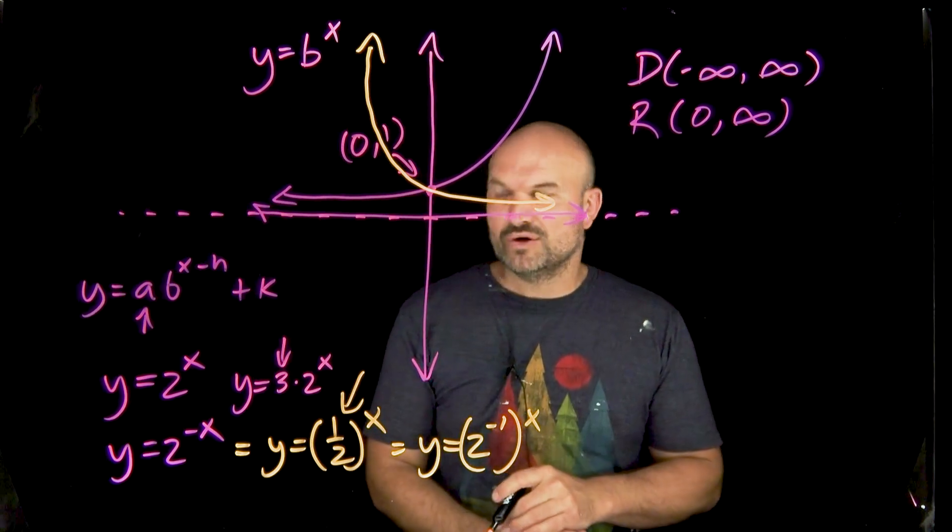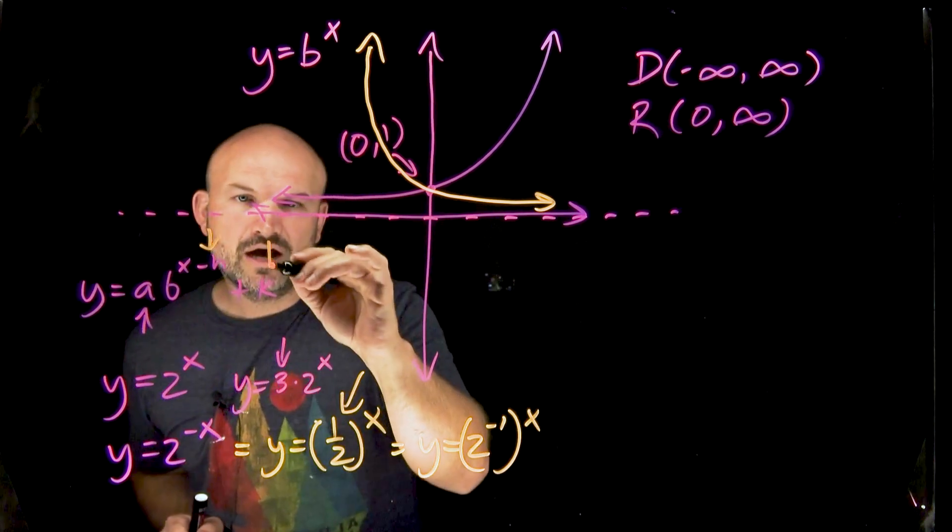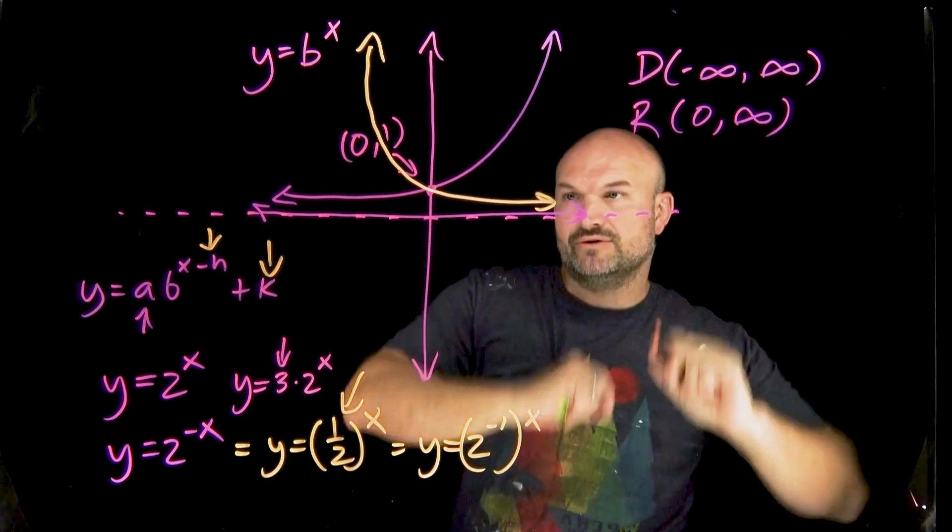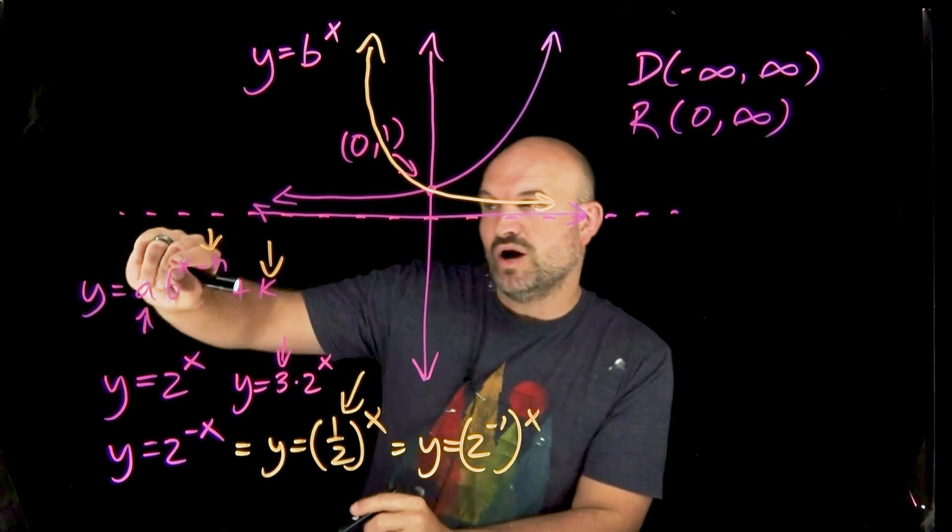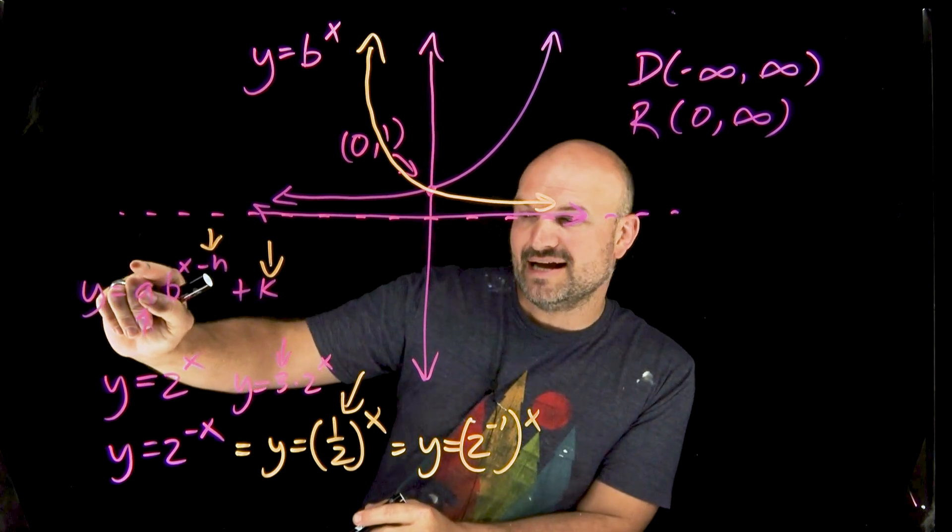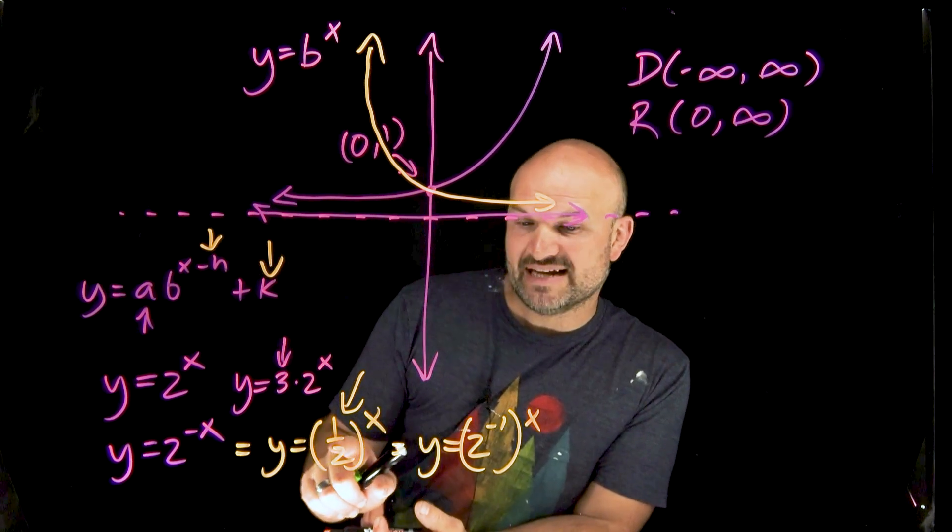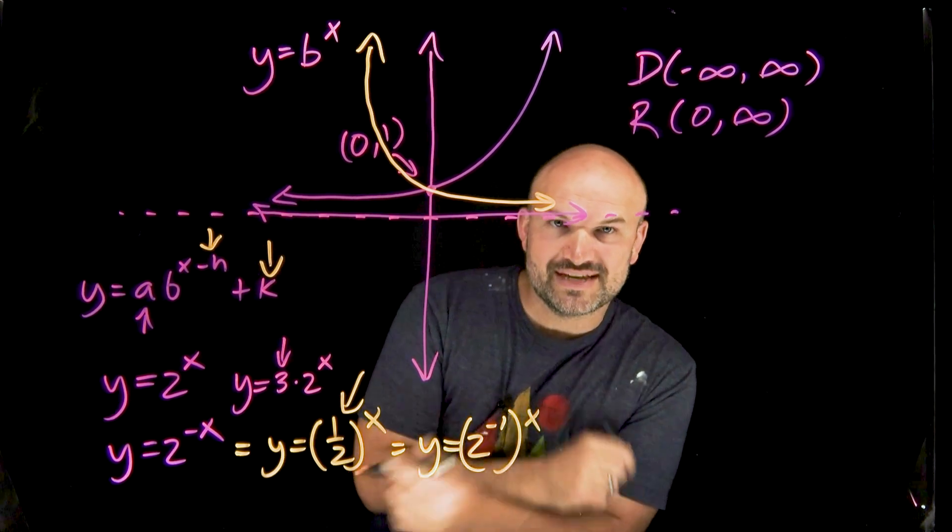We know that our h is going to be shifting our graph left to right. Our k is going to be shifting our graph up or down. But if you can make sure you understand the domain range, understand where the asymptote is, understand the y-intercept as well as the impact that your A is going to make on it and how to differentiate when you have a growth or a decay function based on what the base is or the sign in the power, then you are going to be all set for your test.